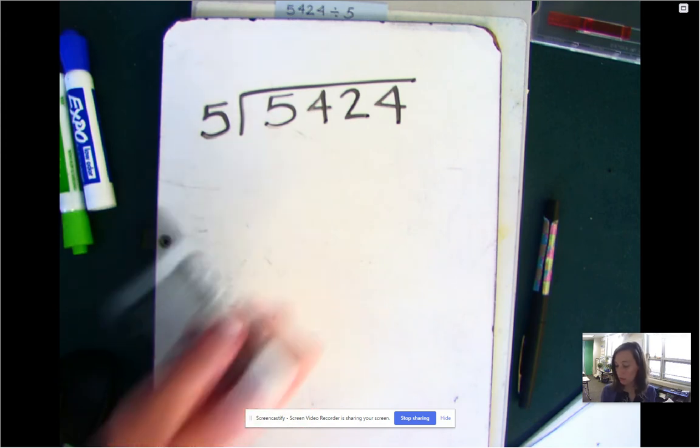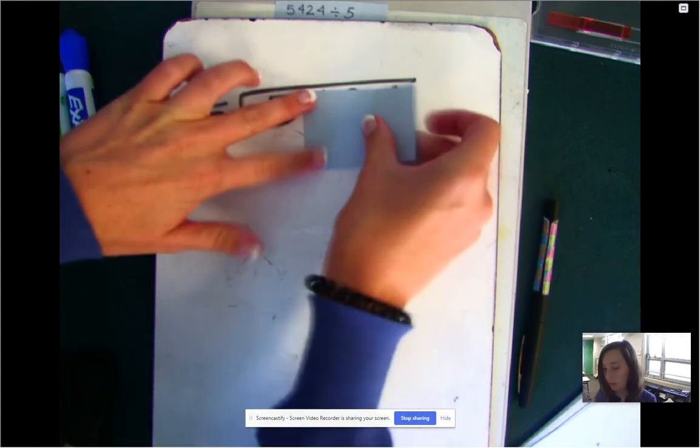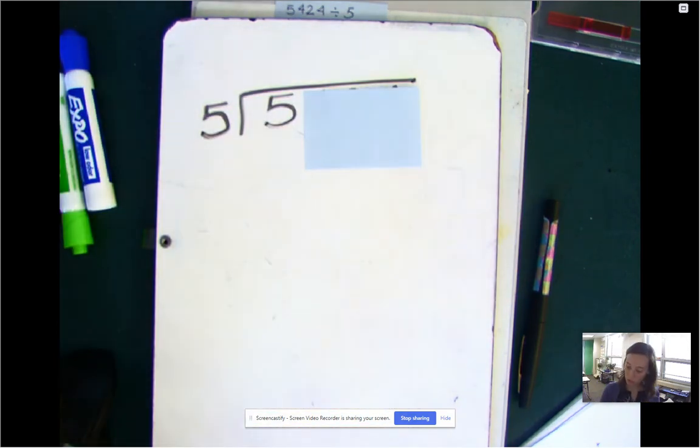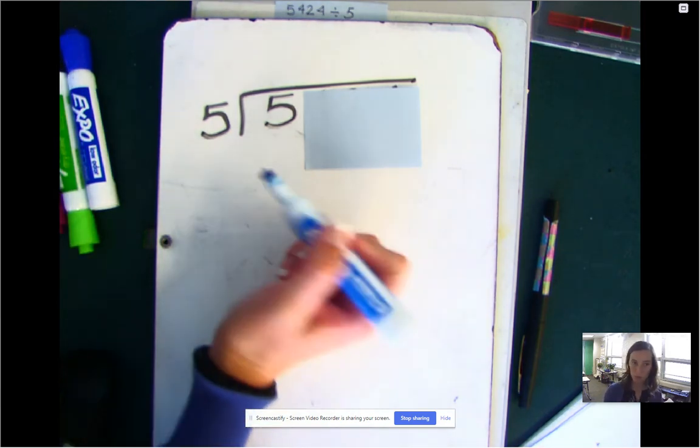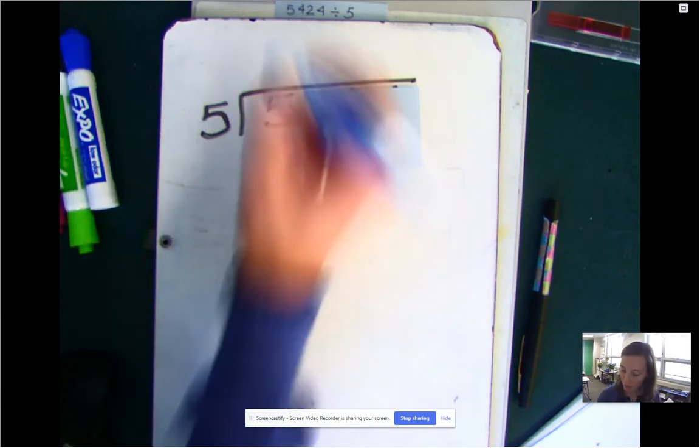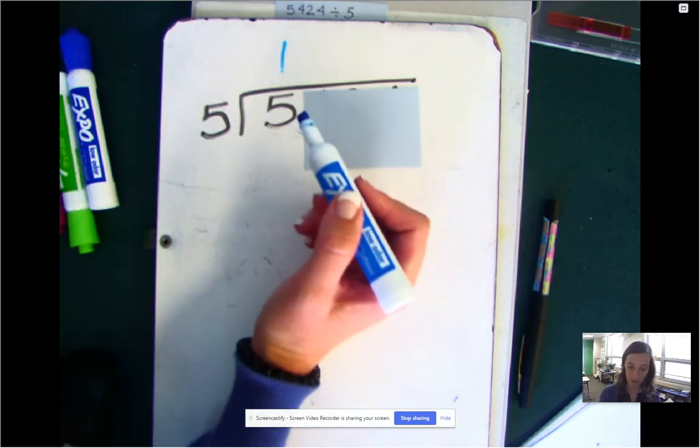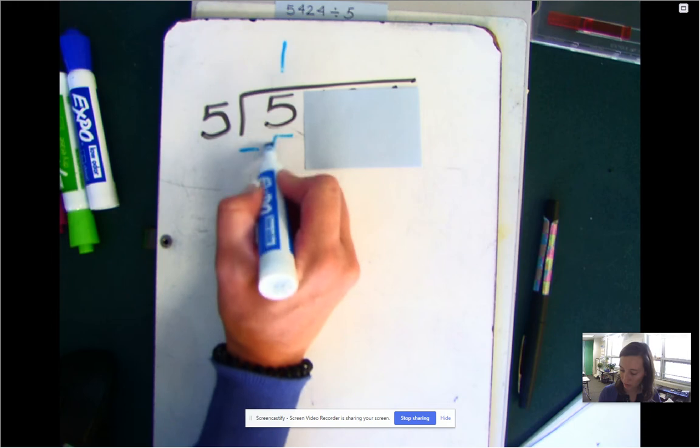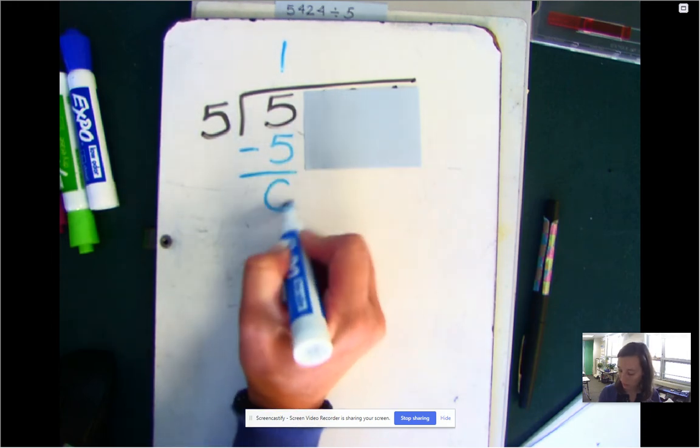So in long division, we start and we go one number at a time. We ignore the other numbers that we are not there to get. So this question is, how many times does five fit into five? Well, five fits into five one time. One times five is five. So I subtract five. Five minus five is zero.